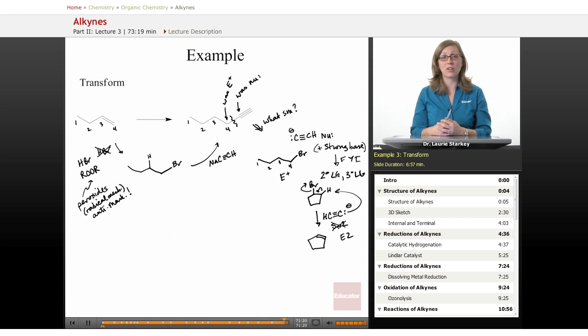So for this alkylation process that we're talking about, we need to have an unhindered electrophile, something like a methyl halide, like a methyl iodide we just saw, or a primary alkyl halide, primary RX is a good SN2.